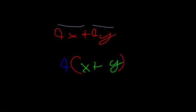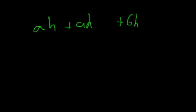But when we get ones like this: ah plus ak plus bh plus bk. What we need to do is we need to factorise them in pairs. So we put a divider.